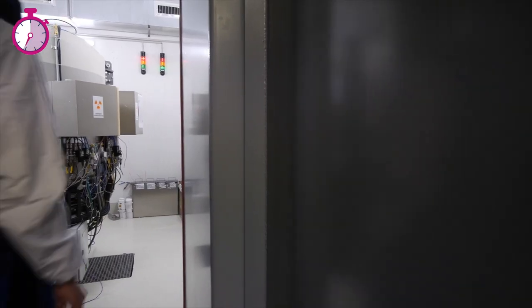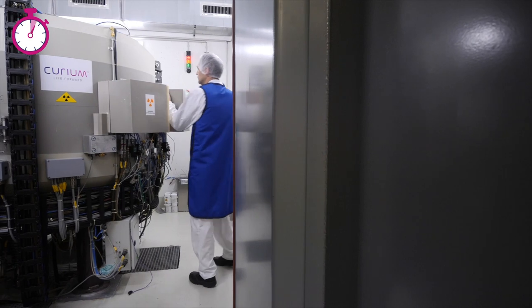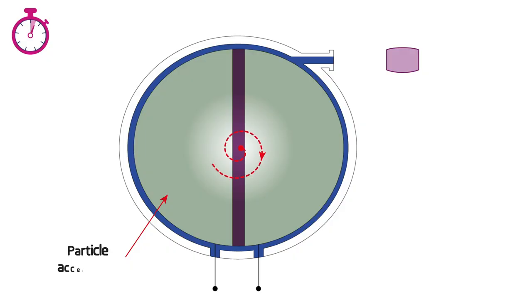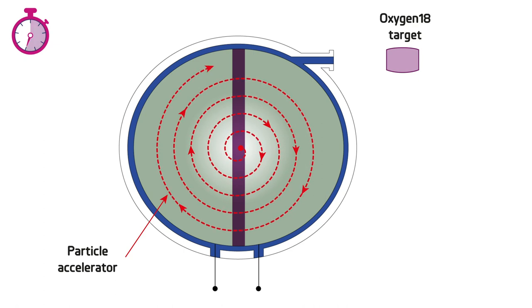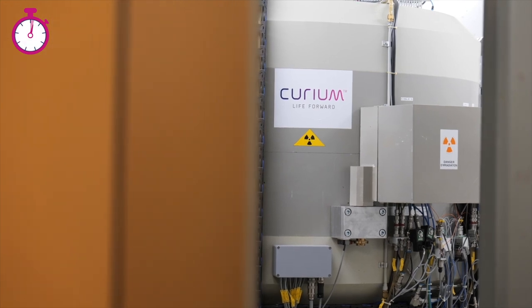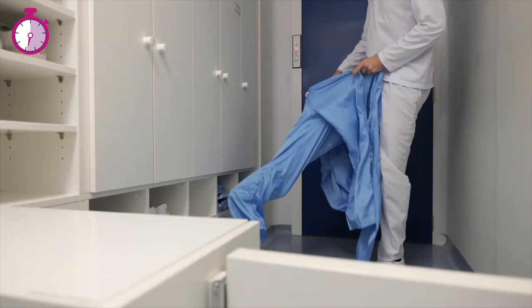The first step of the manufacturing cycle requires starting up the cyclotron in order to accelerate subatomic particles to high speeds, to enable the production of fluorine-18 by the irradiation of oxygen-18-enriched water in a target. Once the process is underway,